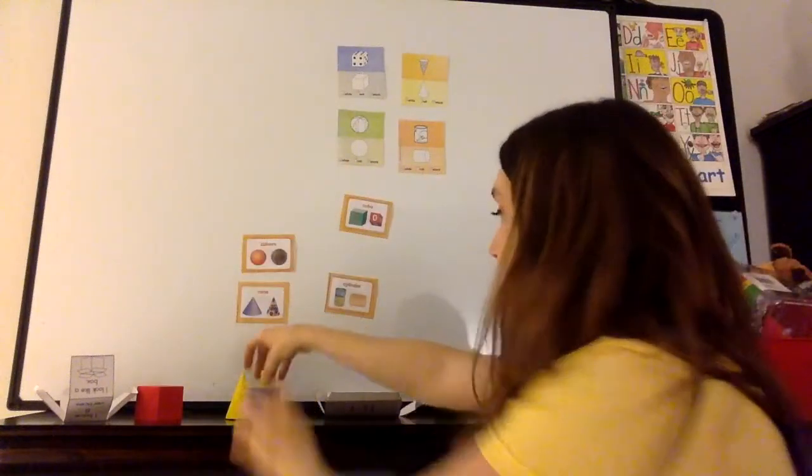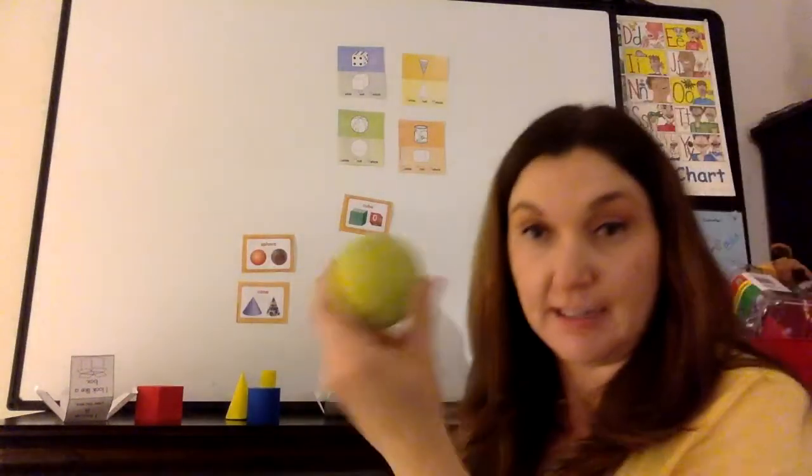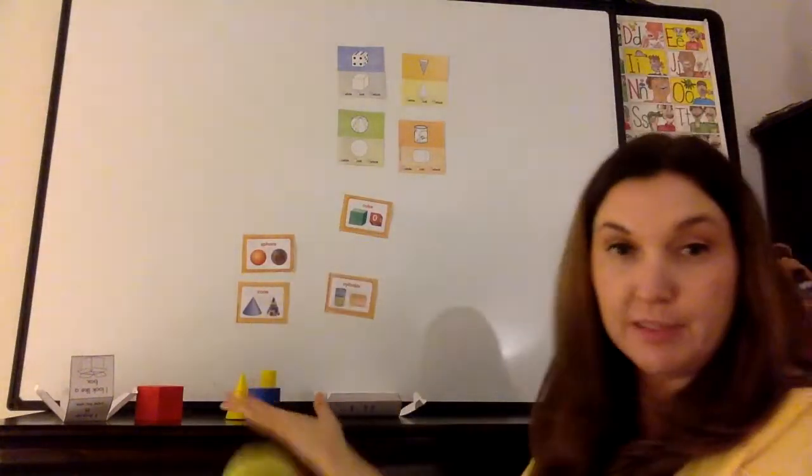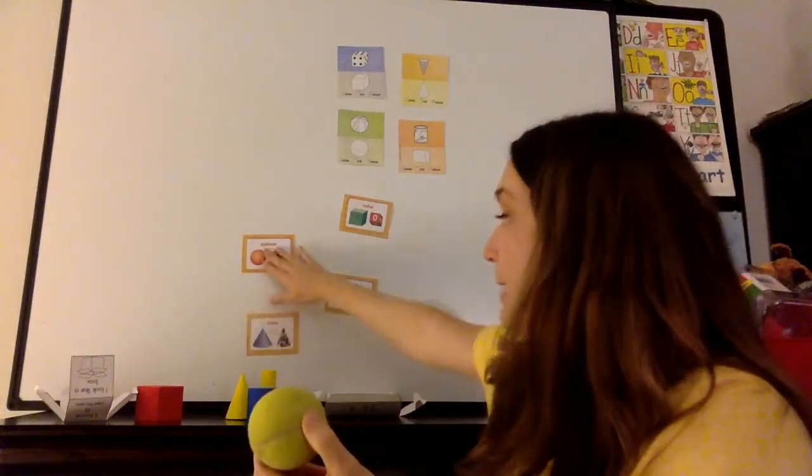All right. The next one is a sphere. You don't have a cutout of that. And I even lost my manipulative from school. So this is like a ball. All right. We look at our sphere. It shows a basketball. A sphere.